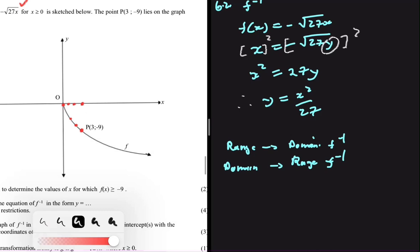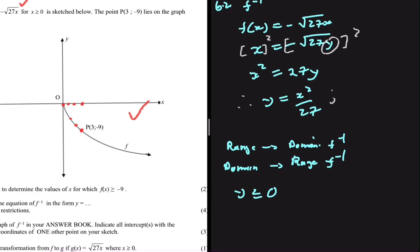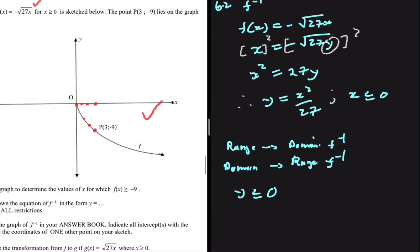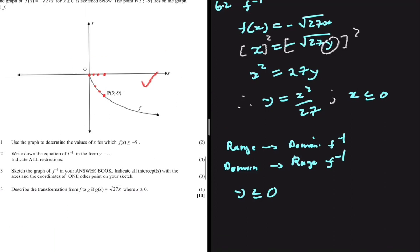If you look at the graph of f of x, you're going to realize that the range is y is less or equals to 0. So that tells us that the domain of our function will be x is less or equals to 0. That is the restriction we need to include there. Let's move to the following question.